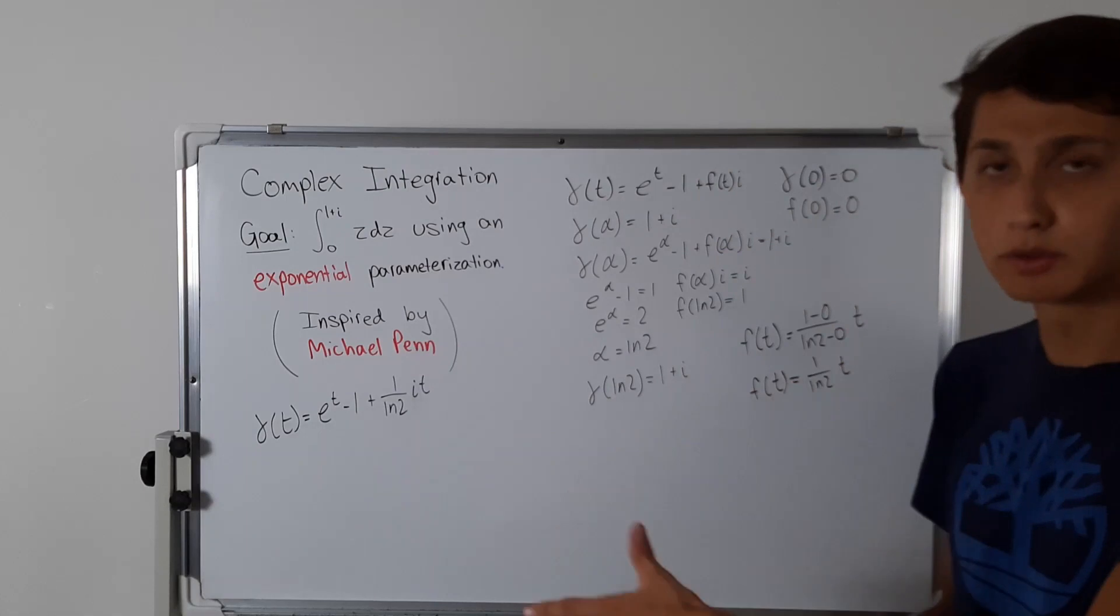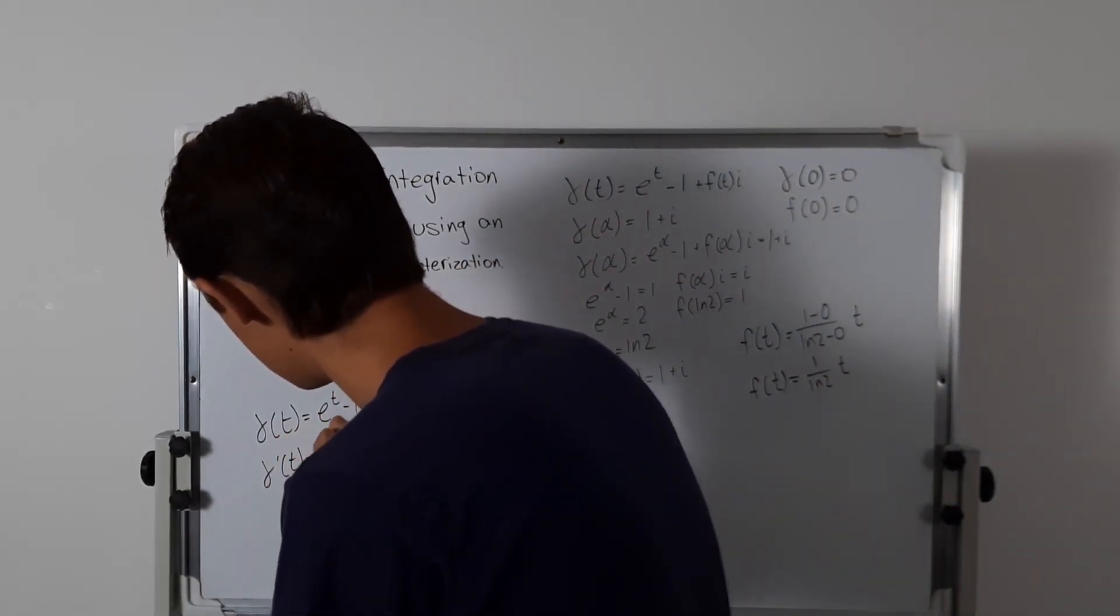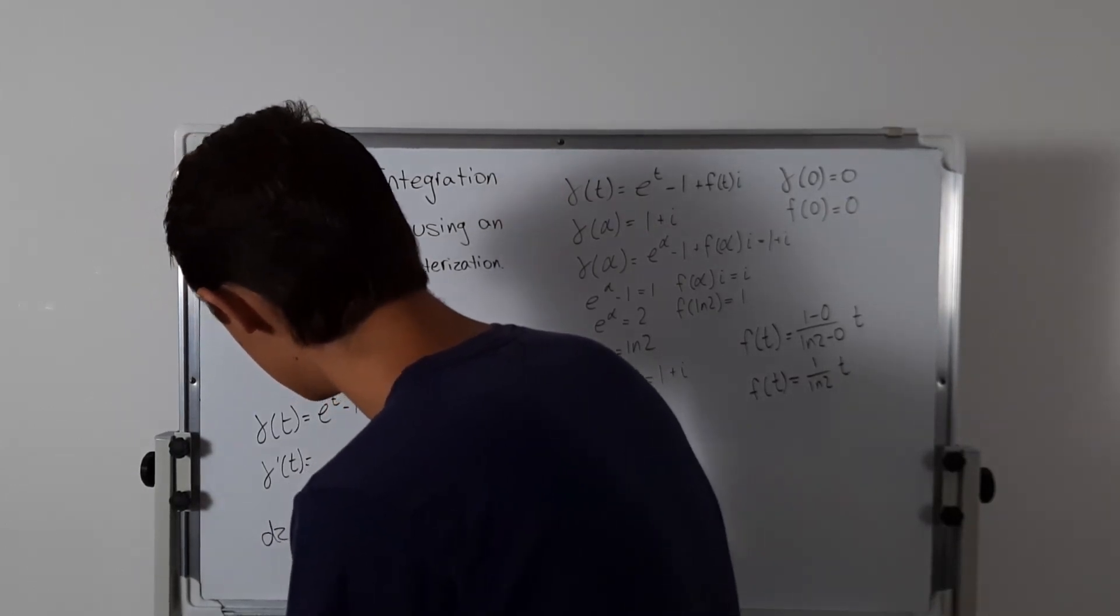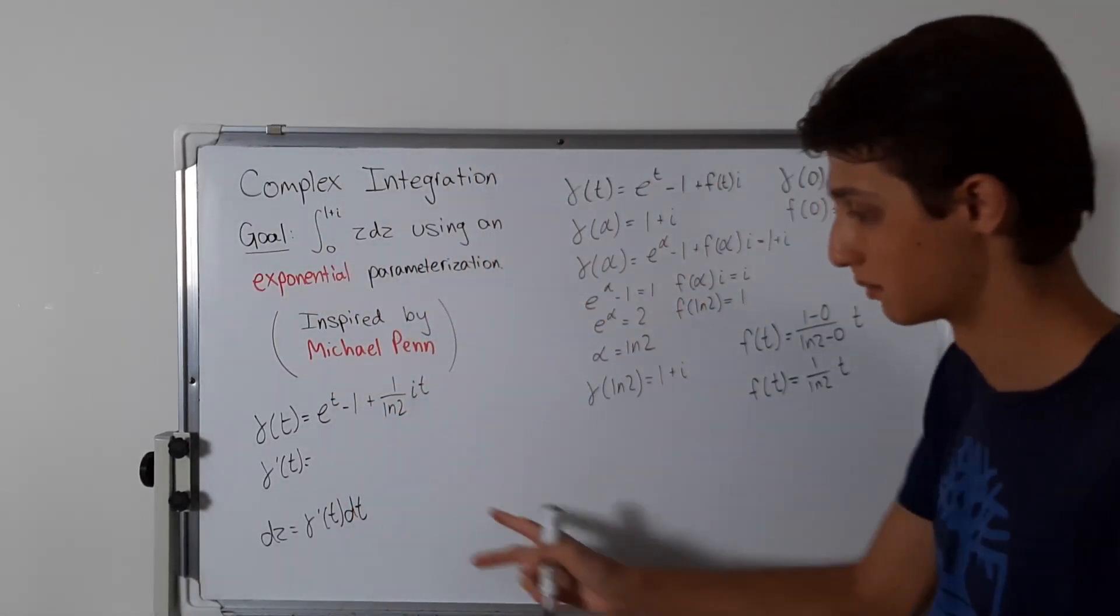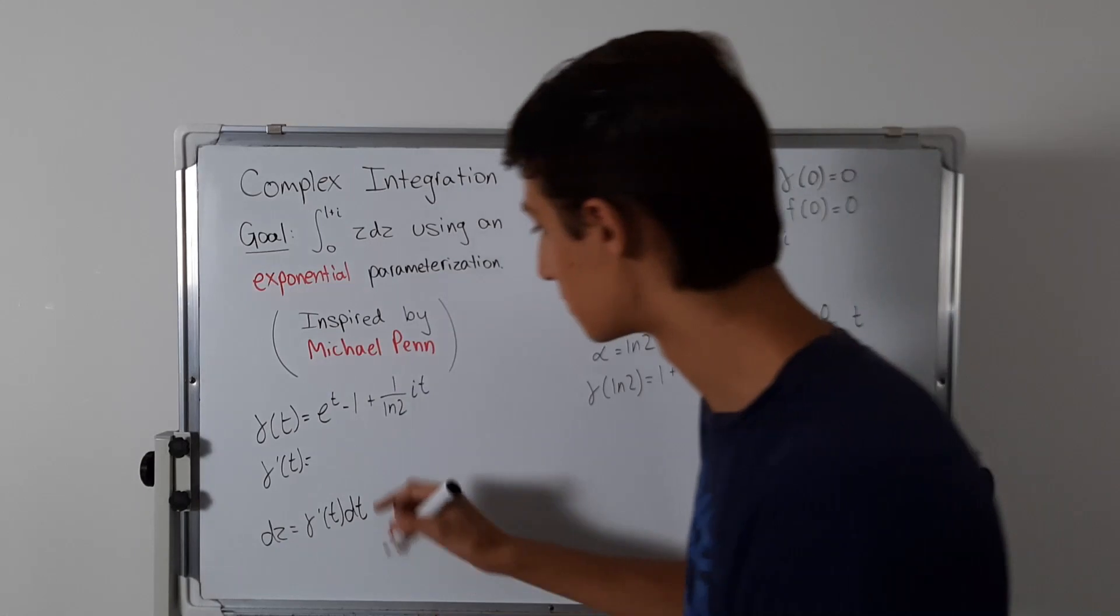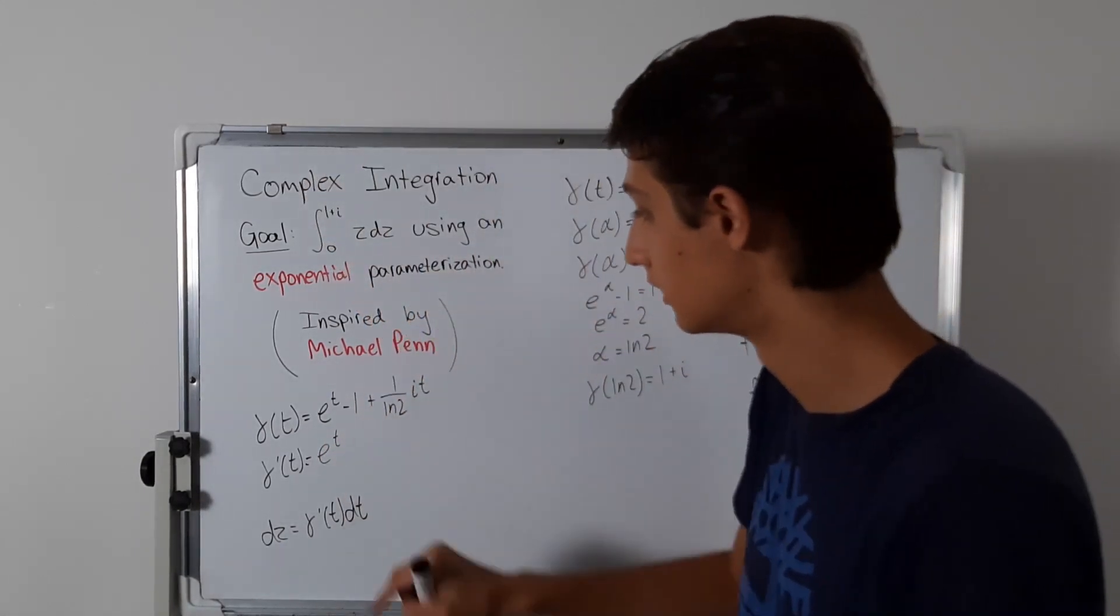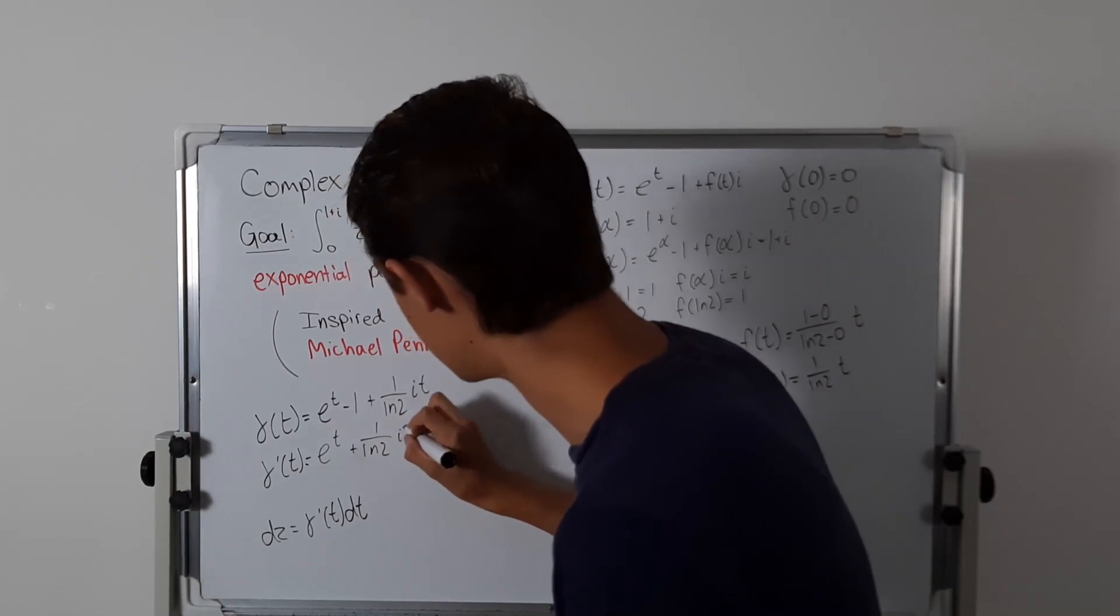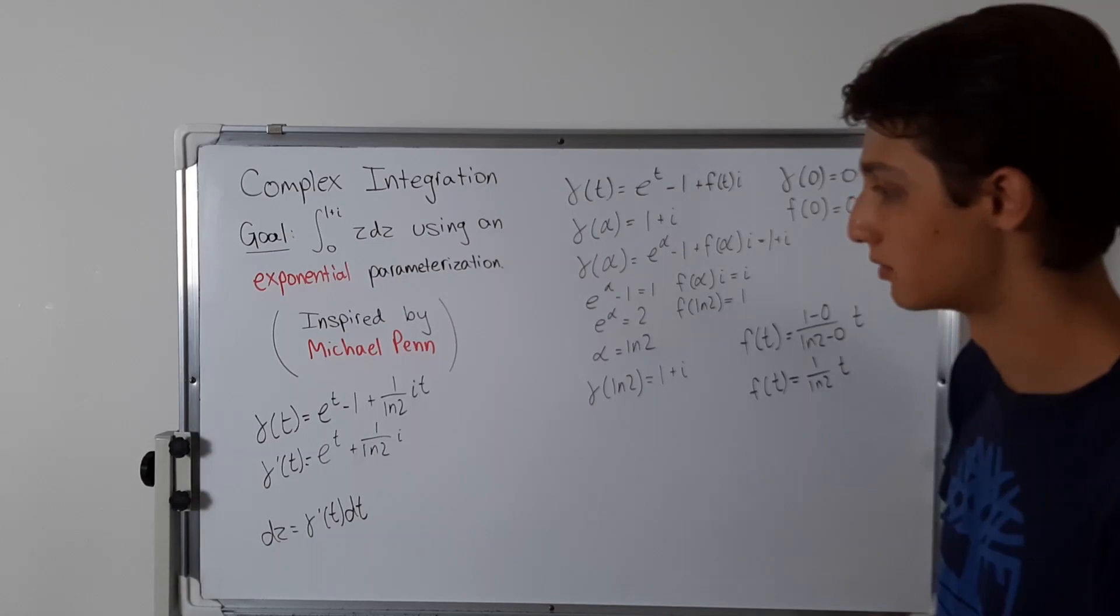What we will also need is gamma prime of t, because dz equals gamma prime of t dt. So gamma prime of t, the derivative of e to the t is itself, this constant goes away, and we're left with 1 over ln of 2 times i. That's our entire gamma prime of t.